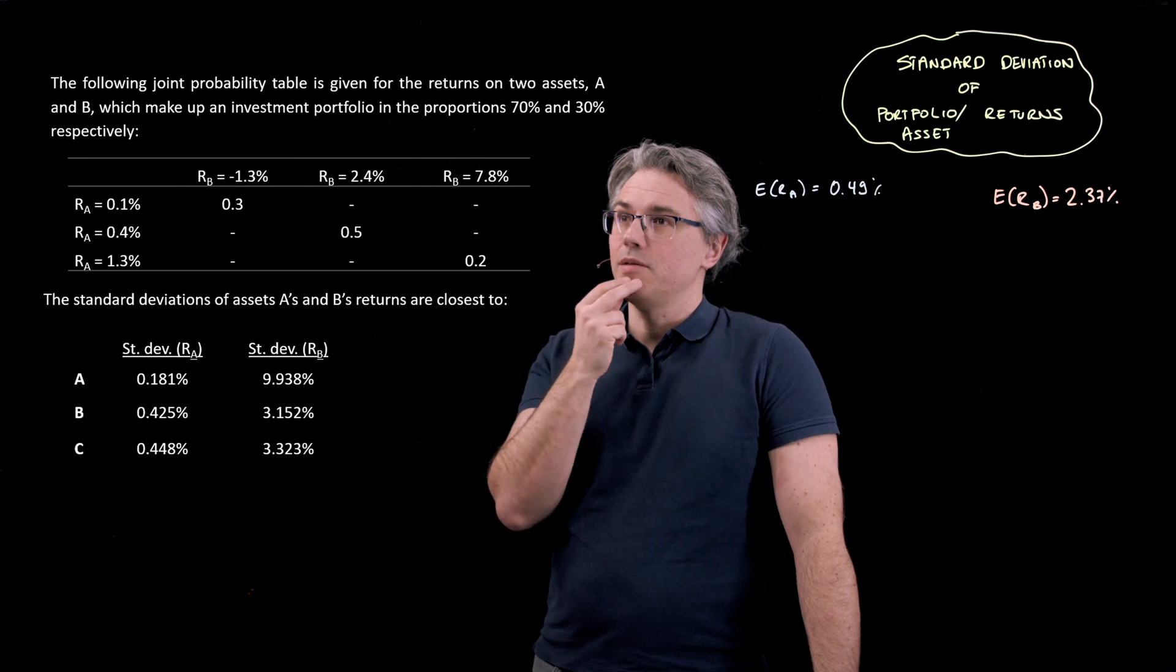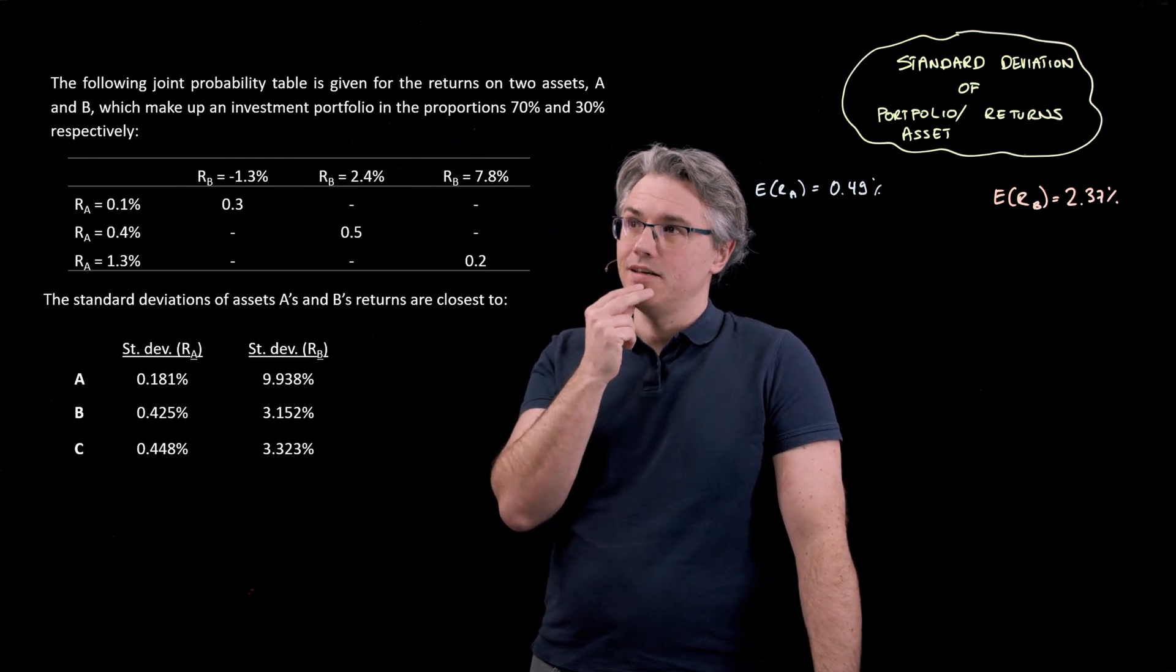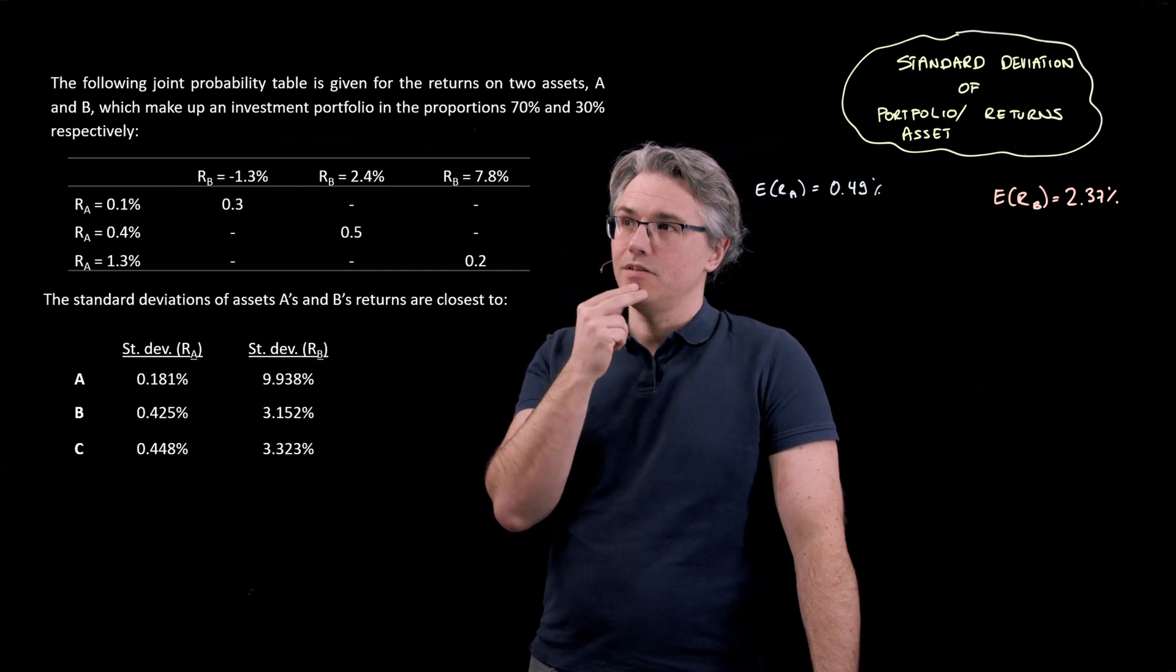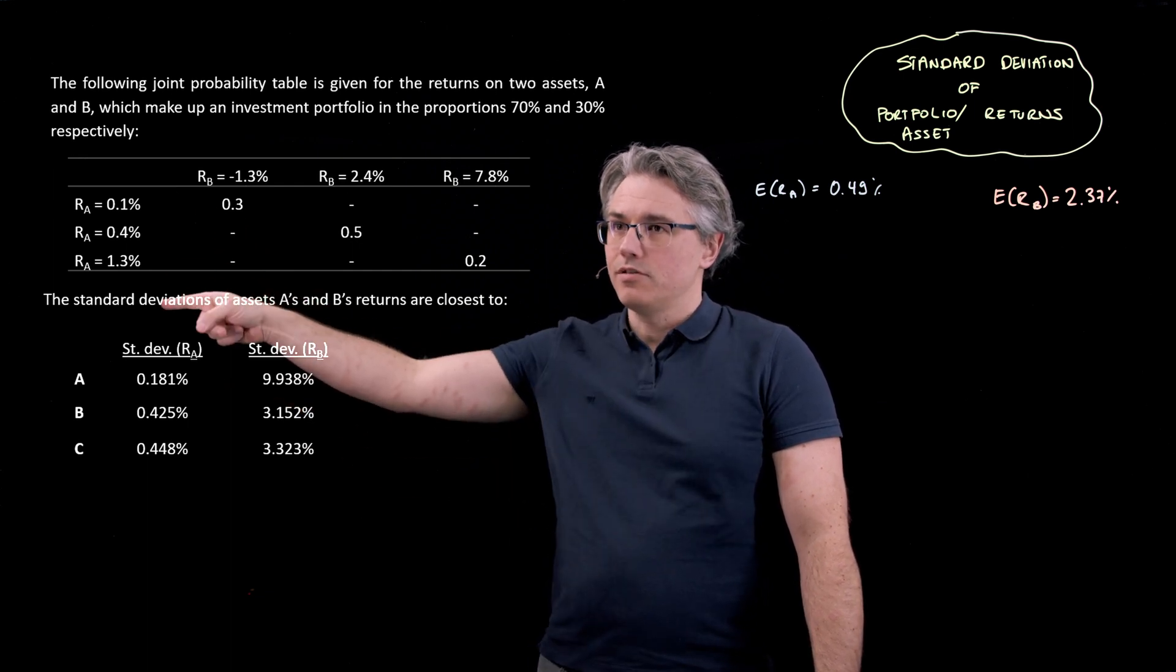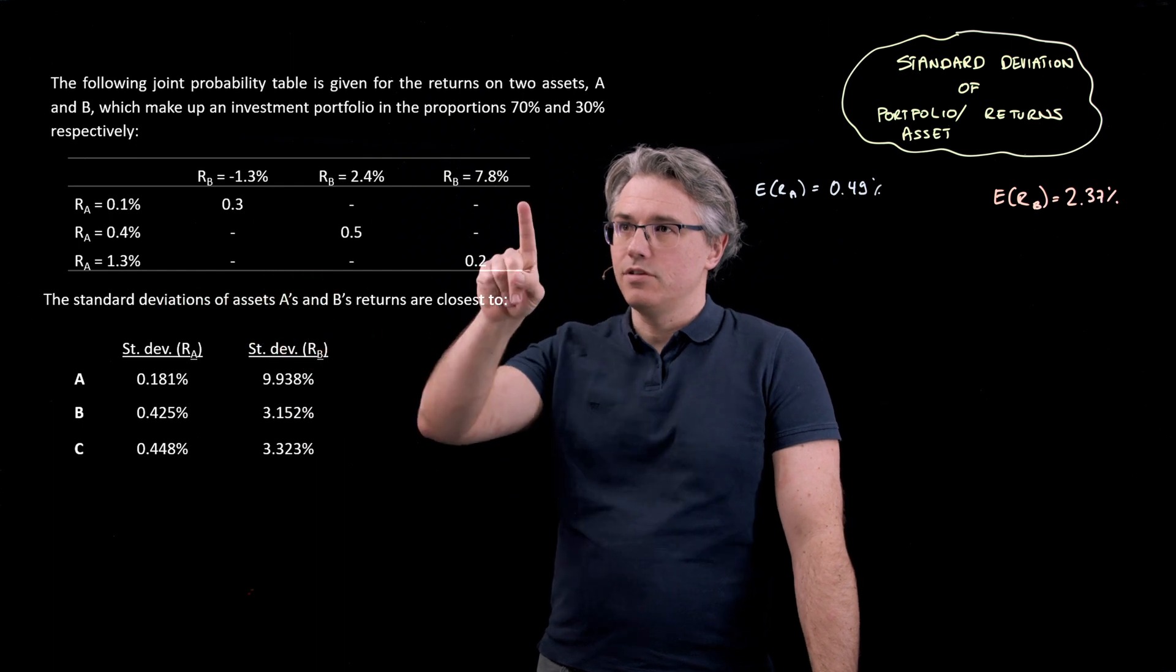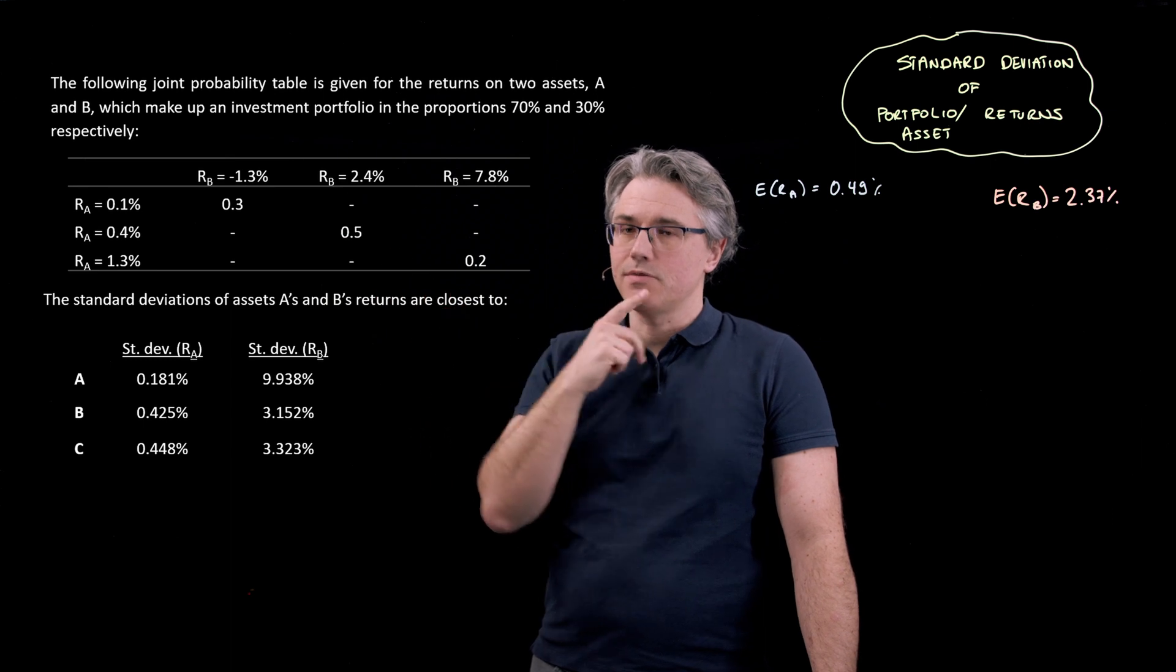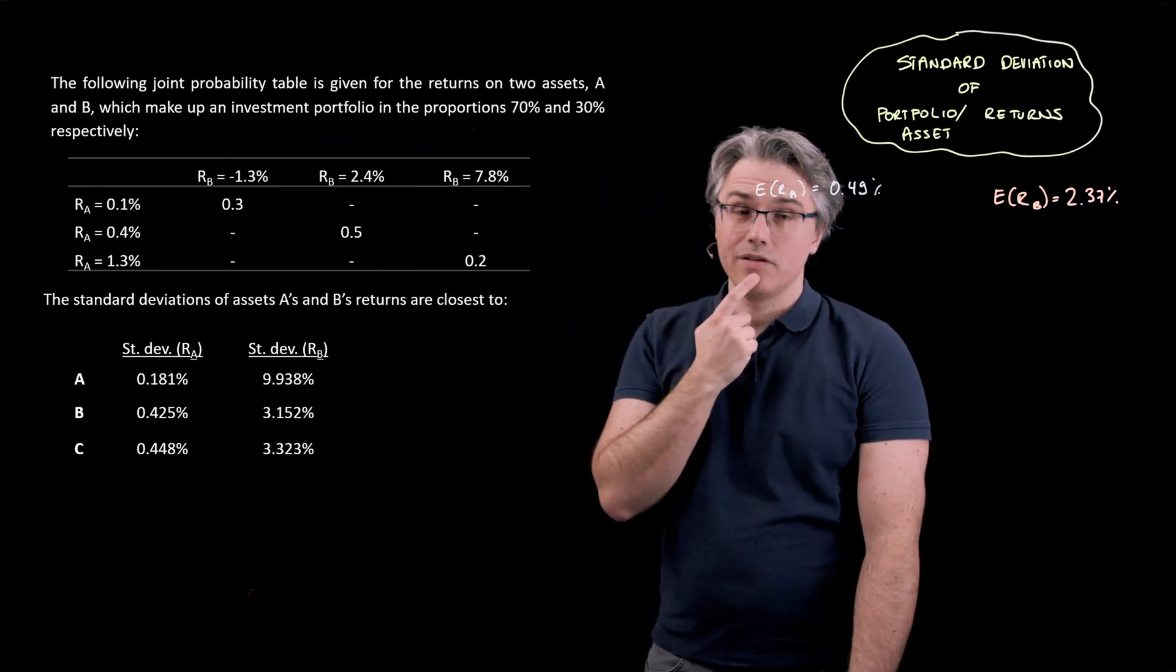The following joint probability table is given for the returns on two assets, A and B, which make up an investment portfolio in the proportion 70% and 30% respectively. And you've got the possible returns for A, the possible returns for B, and the probabilities over here, 30%, 50%, and 20% of those returns happening.